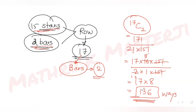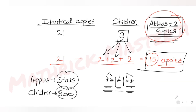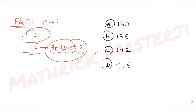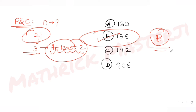So the remaining 15 apples can be divided among three children in 136 ways. Therefore, 21 identical apples distributed among three children with at least two apples each can be done in 136 ways, making option B the correct answer.